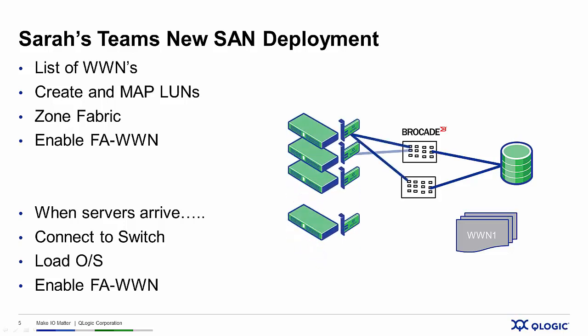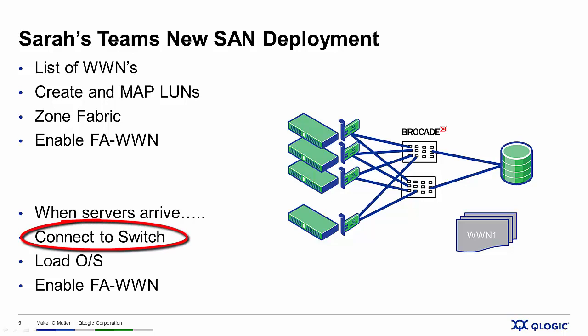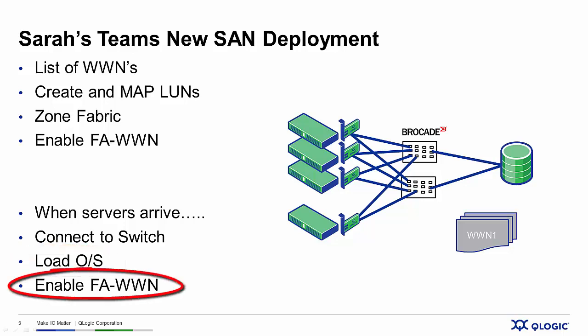Then, whenever the servers arrive, all the server administrator has to do is install the servers, connect them to the switches at the appropriate ports, load their operating systems, then launch a management application called QCC — which we'll talk about in a minute — and enable Fabric Assigned Worldwide Name on the adapter end. Once they do that, they're ready to go.